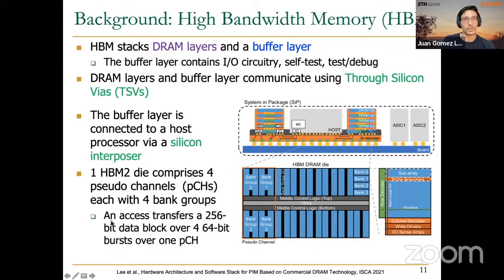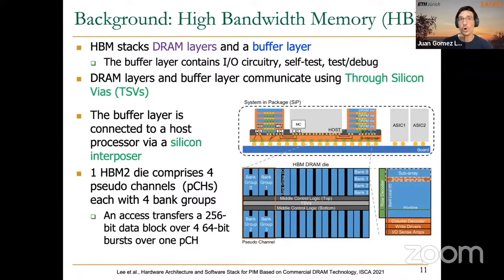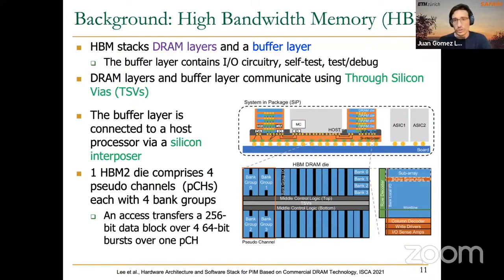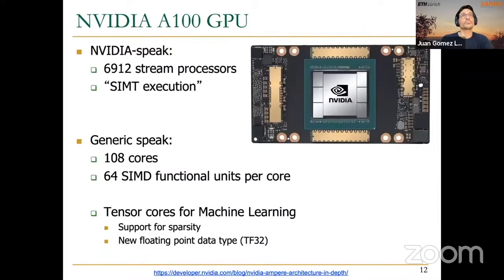One thing to note is that an access to this HBM stack brings 256 bits of data — a block of 256 bits over four 64-bit bursts — over one pseudo-channel. So in four cycles you can read 256 bits from one pseudo-channel. Feel free to stop me anytime if you have questions; I will also keep an eye on the chat.